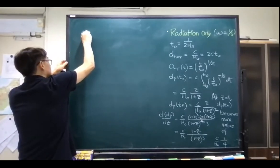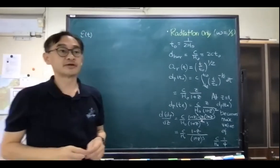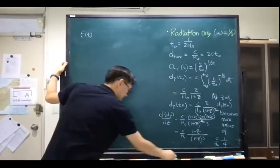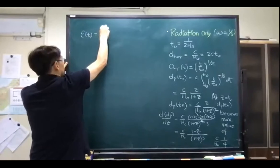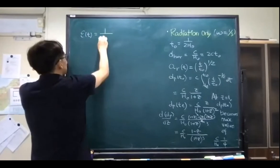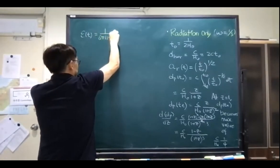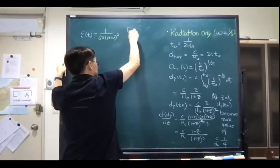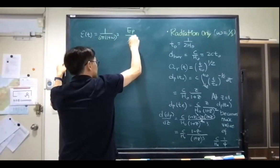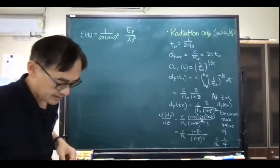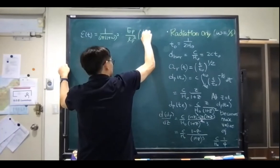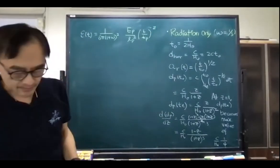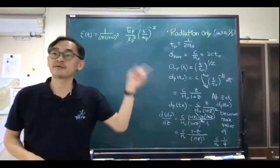We calculated the energy density of any single component at any given time. That turned out to be: ρ = 1/(6π(1+w)²) × (E_p/l_p³) × (t/t_p)^(-2). This was our generic result for the energy density in a single-component universe, expressed in Planck units.